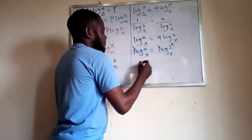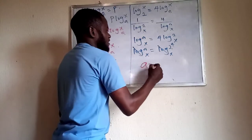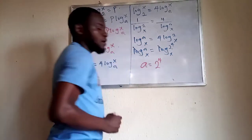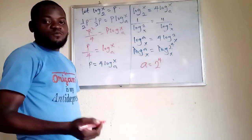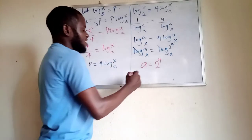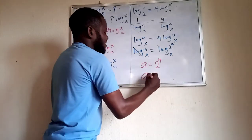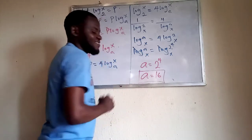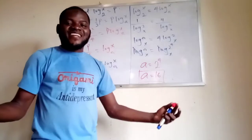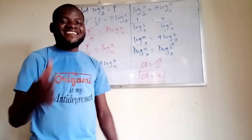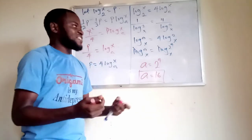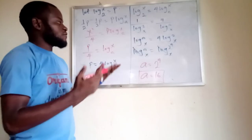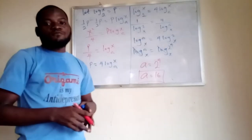Therefore, a equals 2 to the power of 4, which is 16. That is the value of a and the answer. If you liked this video, subscribe and share with your friends, and watch out for more mathematical problems like this.